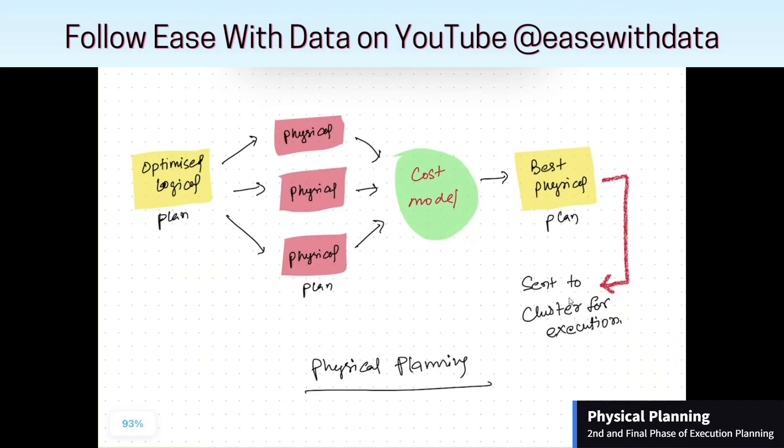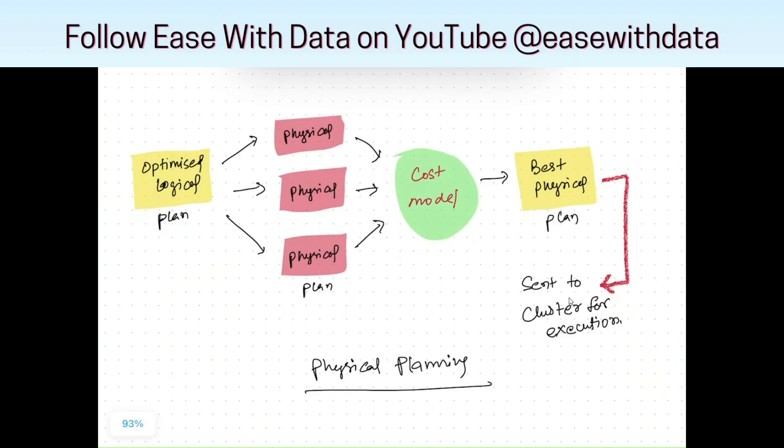Next in planning is the physical planning. Once the optimized logical plan is ready, Spark generates multiple physical plans based on the cluster and the physical configuration. These physical plans are run against a cost model which basically generates cost for each of the physical plans.